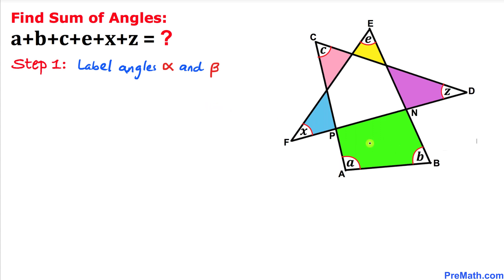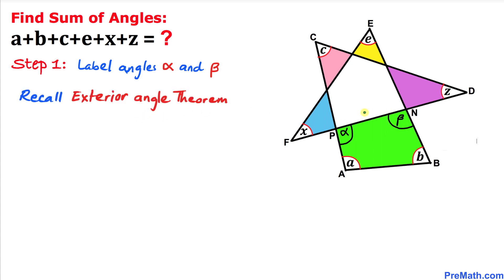Here's our very first step. Let's focus on this quadrilateral ABNP. Let me go ahead and label this angle as alpha and this angle as beta. We are going to solve this given problem by using the exterior angle concept.